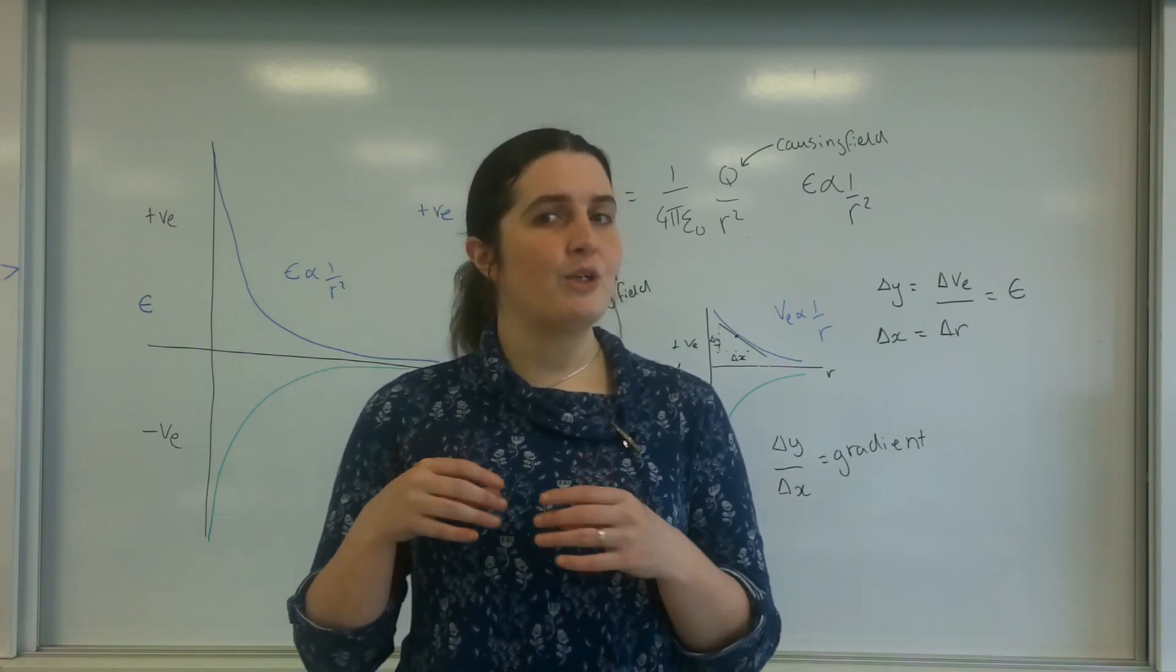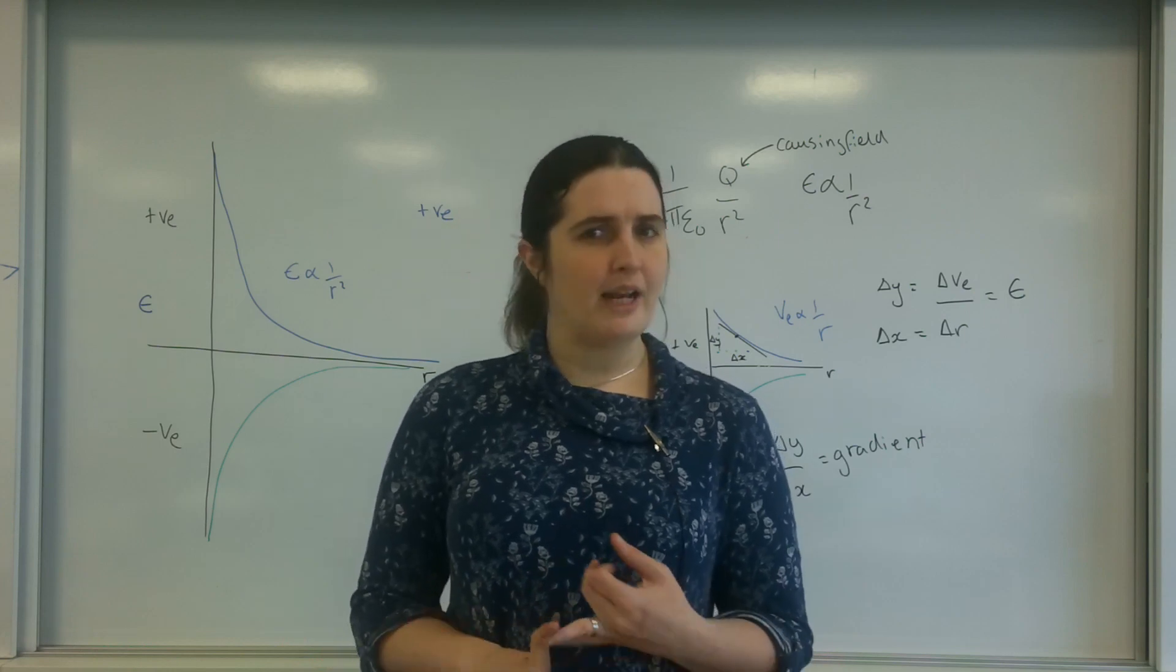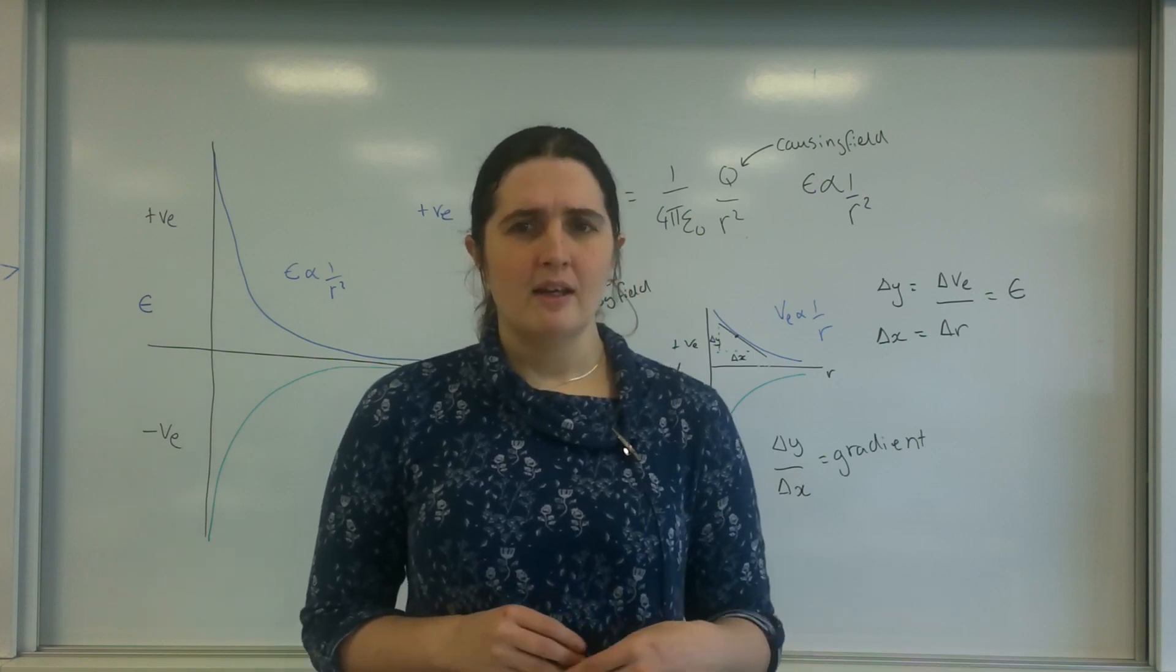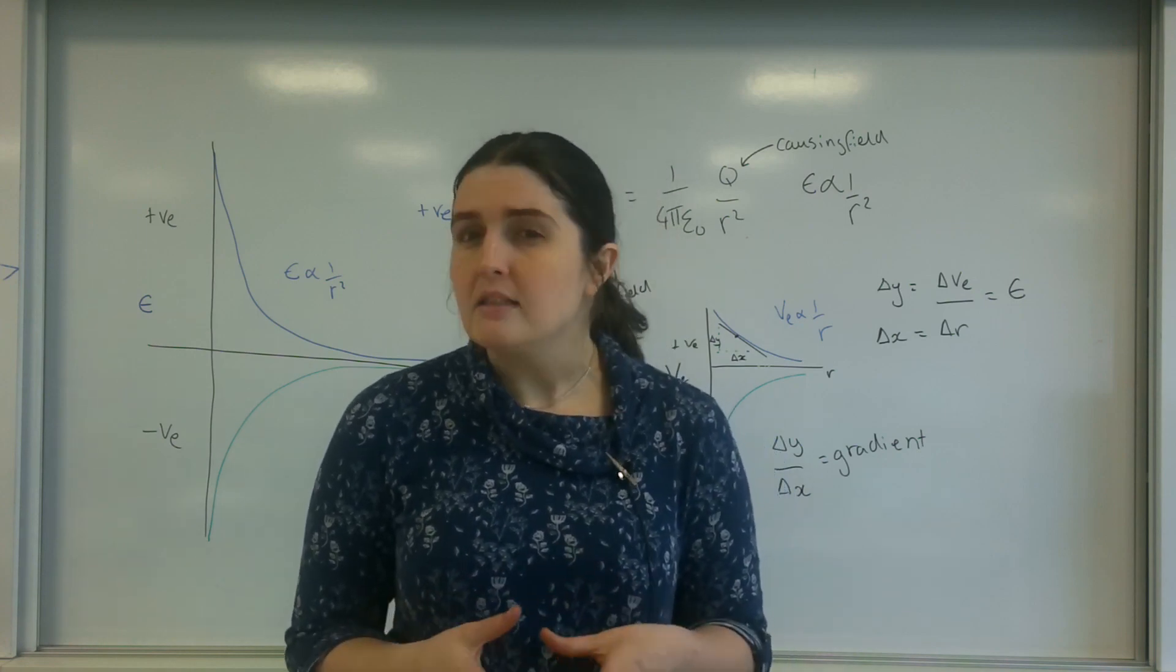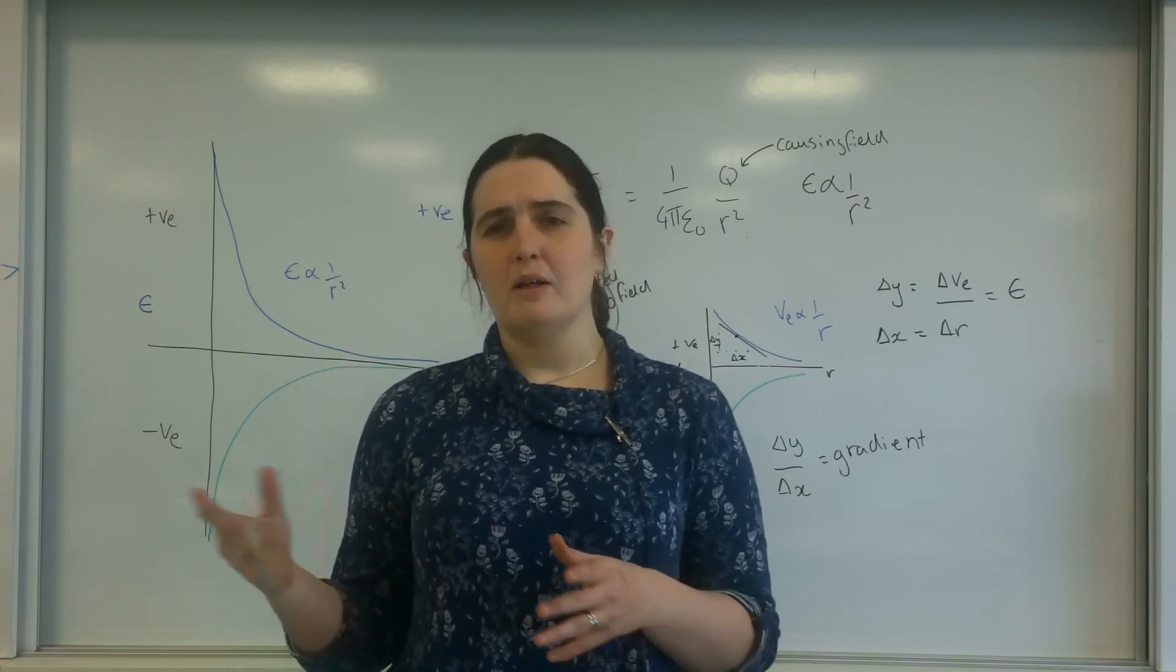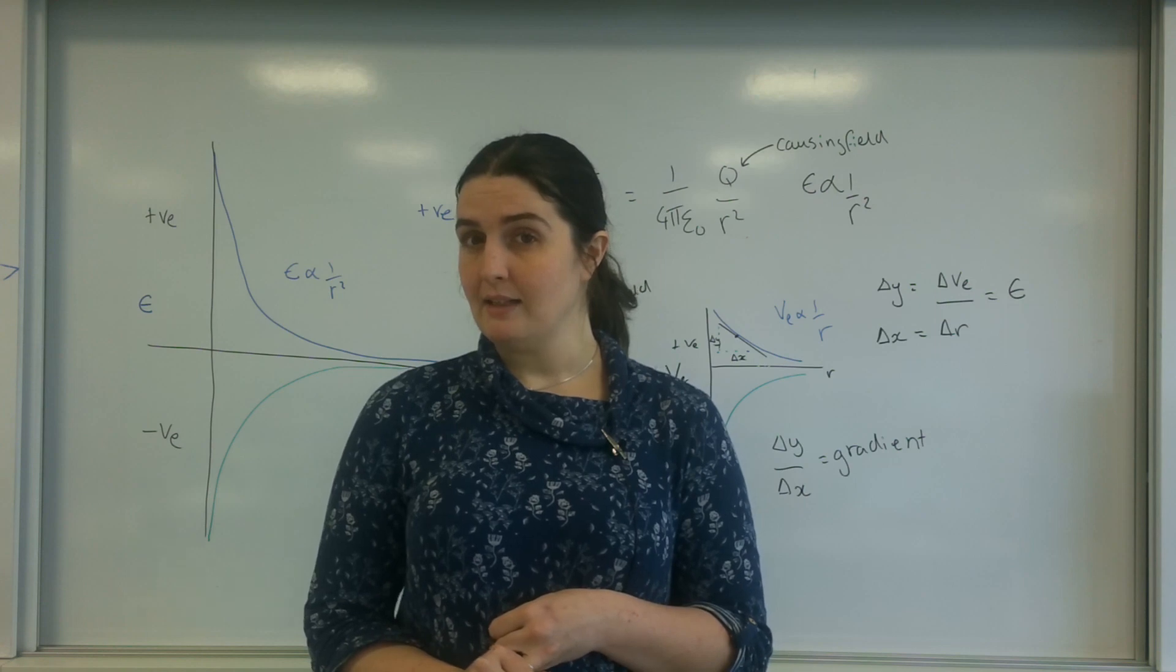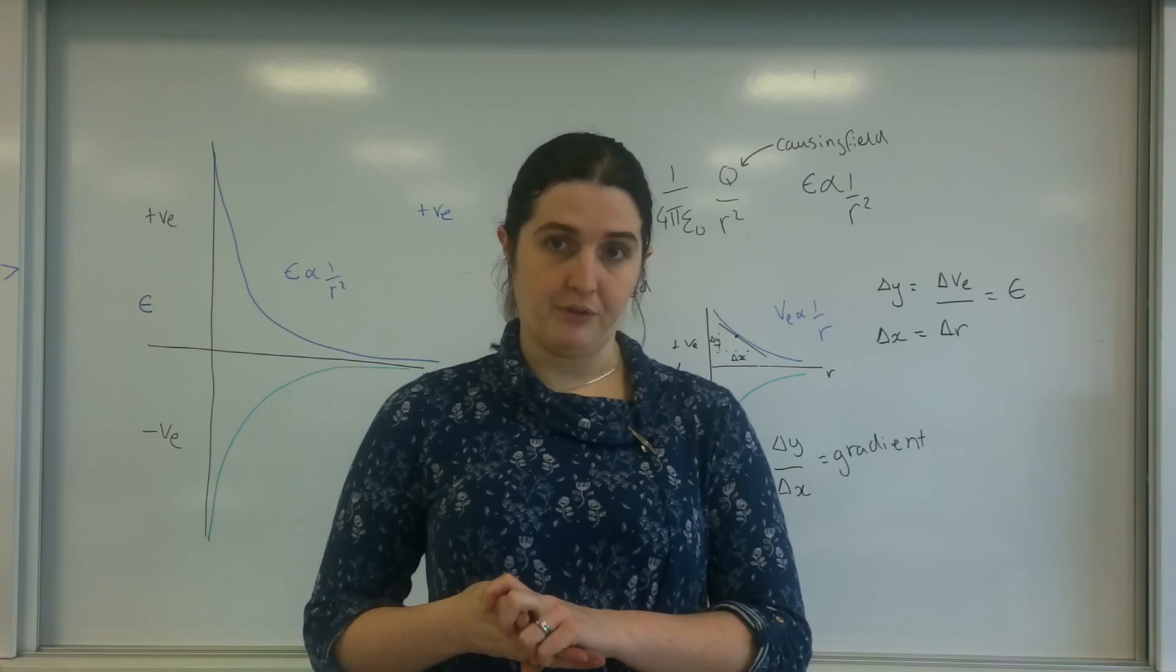So when you're looking at your graph and you're asked to analyze it, have a look at it. Is the potential negative? If the potential or the electric field strength is negative, that means the charge is negative. And then go, okay, so they're asking me to work out the electric field strength. I've been given a potential one. Have a look. If I took the gradient of that point, change in potential over change in r, I've got the electric field strength out. So when you are using graphs, you are really interested in the gradient or the area underneath. So that is the graphical representation of radial electric fields.